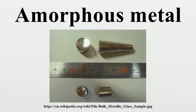Perhaps the most useful property of bulk amorphous alloys is that they are true glasses, which means they soften and flow upon heating. This allows for easy processing, such as by injection molding, in much the same way as polymers. As a result, amorphous alloys have been commercialized for use in sports equipment, medical devices, and as cases for electronic equipment.